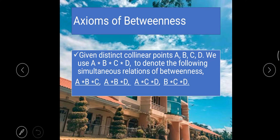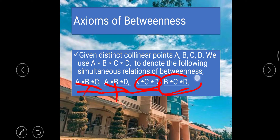Given distinct collinear points A, B, C, and D, we use A, B, C, and D to denote the following simultaneous relations of betweenness: B is between A and C; B is between A and D; C is between A and D; and lastly, C is between B and D. These are visible among the four points.